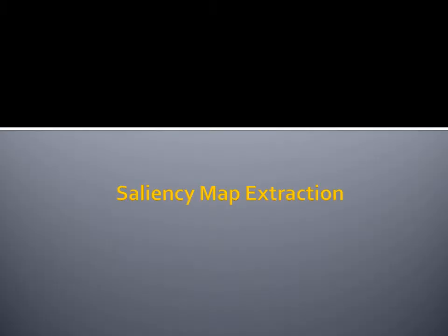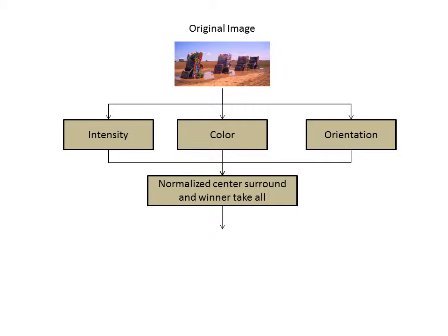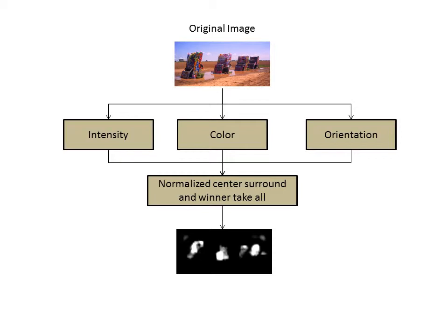The next stage in the framework is to extract the saliency map for the image. We extract the saliency map using intensity, color, and orientation pyramids to compute a normalized center-surround conspicuity map. Using a winner-take-all approach, we compute the overall saliency map from the image using the algorithm proposed by Itti et al.